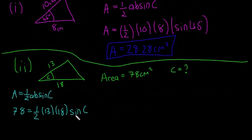So if you want to rearrange that, or stick it into the calculator, you'll get that 78 is equal to 117 sine of C. So that's sticking those numbers into a calculator and multiplying them all by each other.